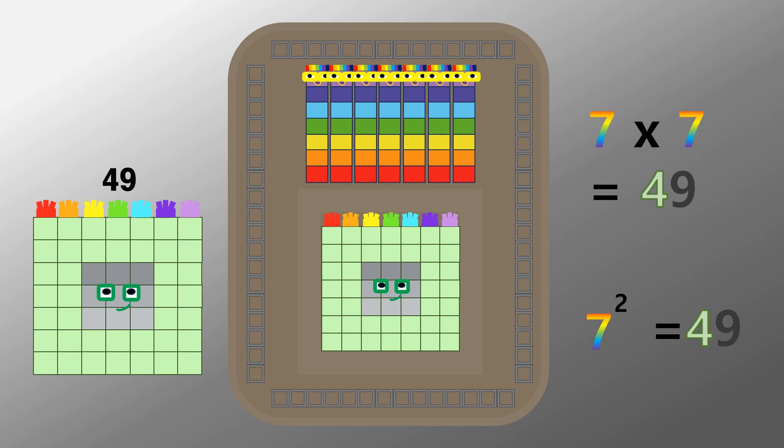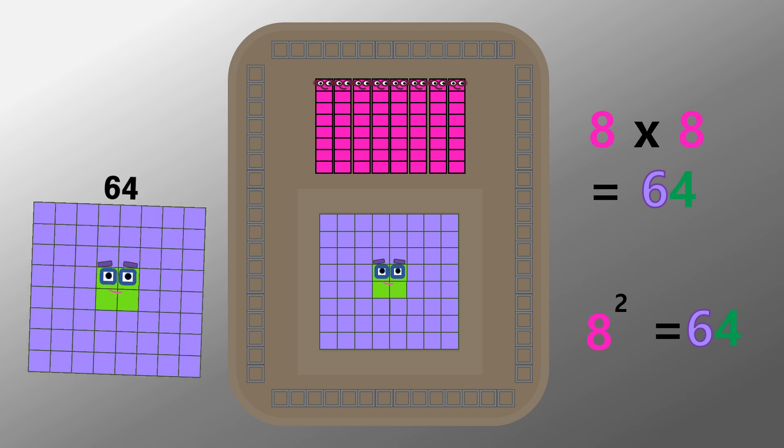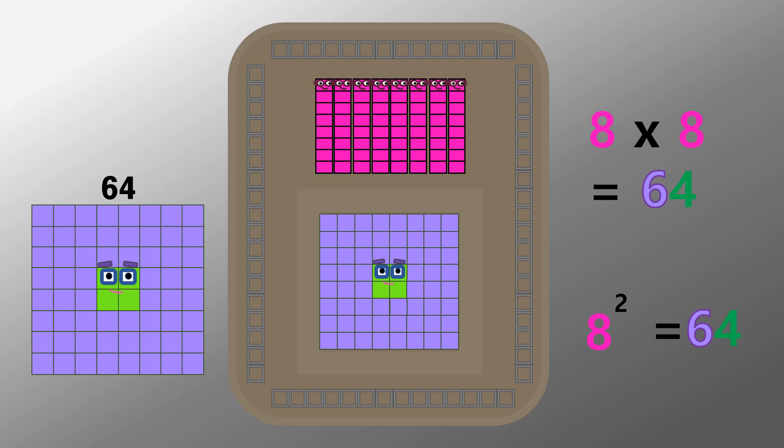I am forty-nine. Seven by seven. Seven across by seven down. I am sixty-four. Eight by eight. Eight across by eight down.